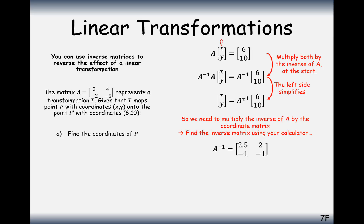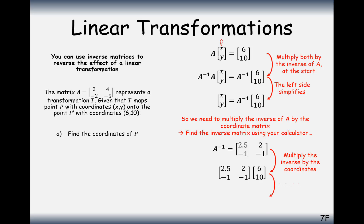You can use your calculator for these types of questions. The inverse matrix works out to [2.5, 2; -1, -1]. Pre-multiplying that by the image coordinates (6, 10) gives us (35, -16). So the coordinate (35, -16) under this matrix will transform to (6, 10).